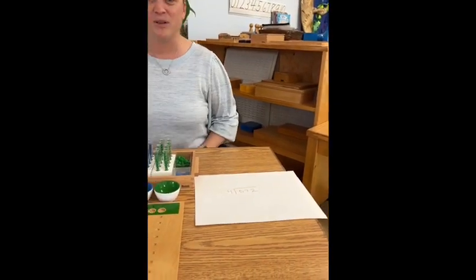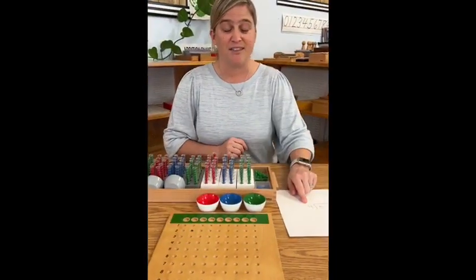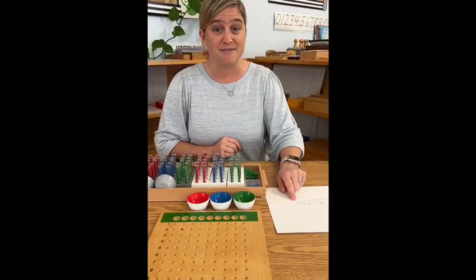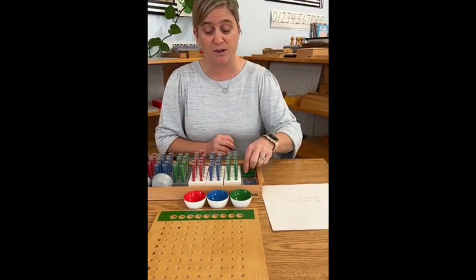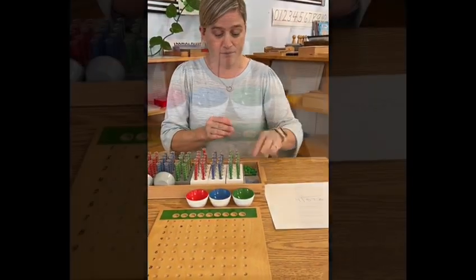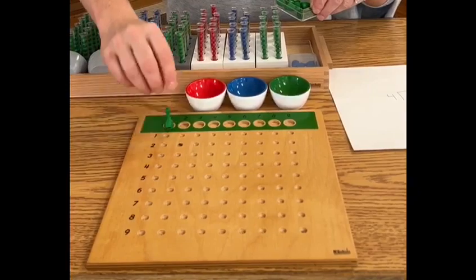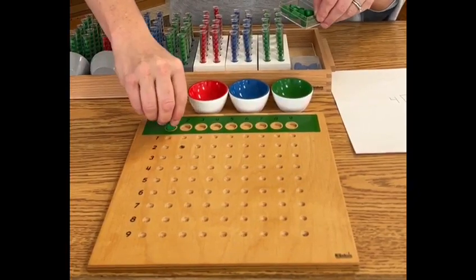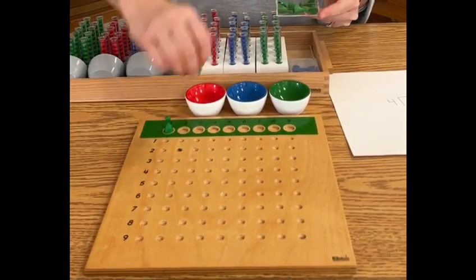To begin, we will need to set up our Skittles. They represent the divisor — the number of times that we are dividing it by. These are our Skittles and we'll need four Skittles.